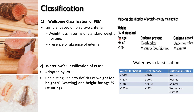When weight is 60% of standard weight or less and edema is present, it could be Marasmic Kwashiorkor — the intermediate type. If edema is not present, that condition is Marasmus. The Waterloo classification of protein energy malnutrition, adopted by WHO, takes two variables: standard weight for a particular height and standard height. If weight is low as per standard height, that is wasting. If height is low as per age group, that is stunting.